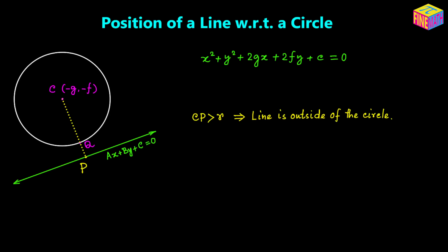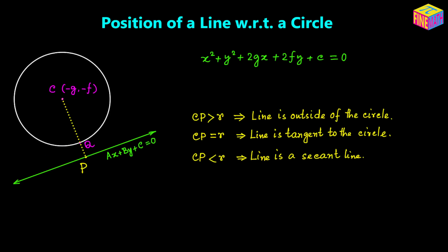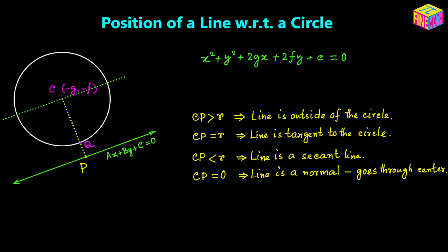So here I am making the notes. When Cp is greater than the radius, the line is outside of the circle. When Cp is equal to the radius, the line is actually going to be a tangent line for the circle. When Cp is less than the radius, the line is a secant line. And when Cp is equal to 0, that means the line goes through the center — that will be called the normal line. A straight line going through the center of a circle is the normal line, and it passes through the center of the circle.